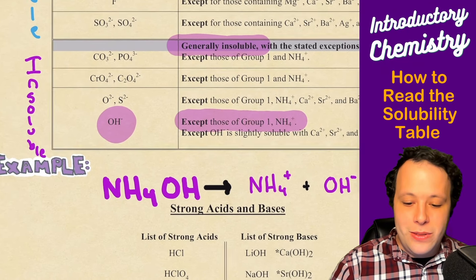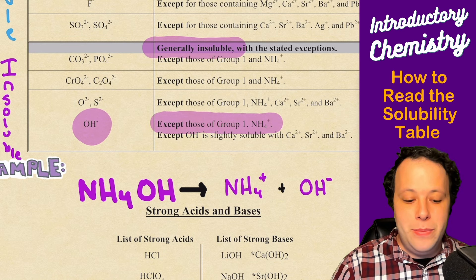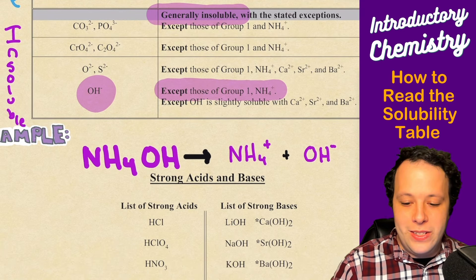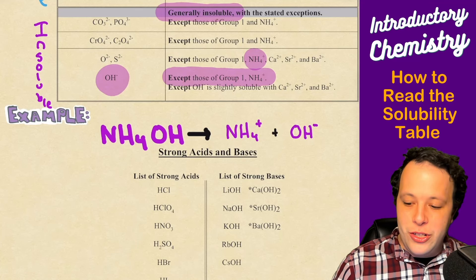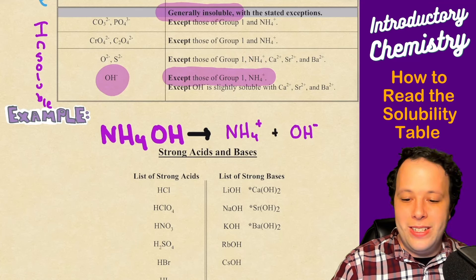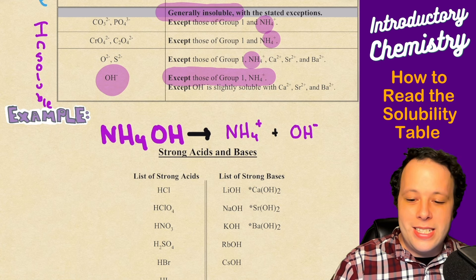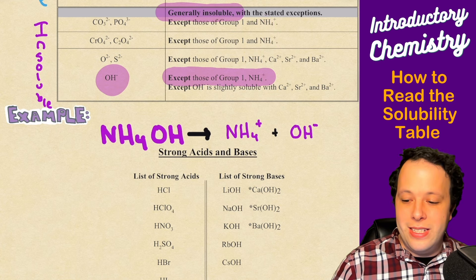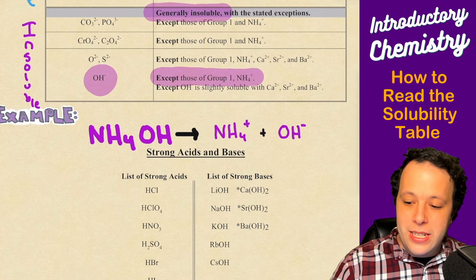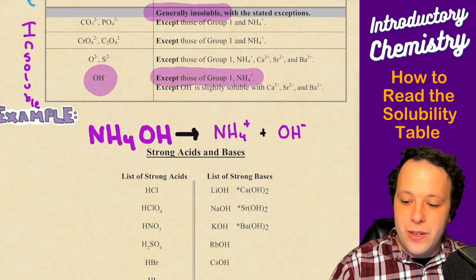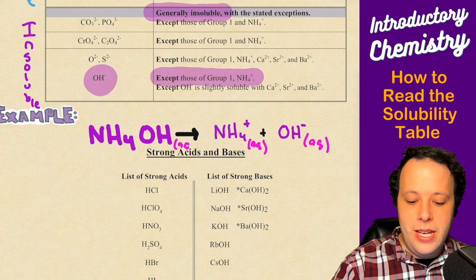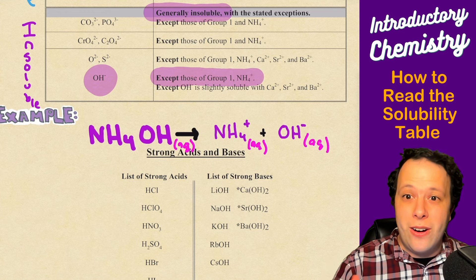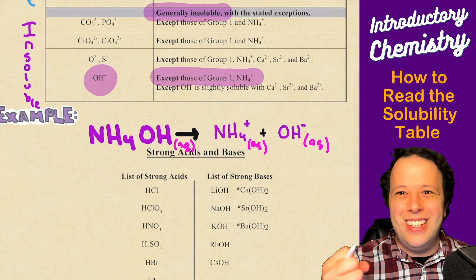So that tells you that this is going to be soluble. You can also see it up here — except when bound to ammonium for oxygen as well. You notice how ammonium appears almost everywhere as a big exception rule — it's always soluble. So what we can do is write AQ after all these species to show that this is going to be soluble, and when we're writing our ionic equations, that's how we handle this one.